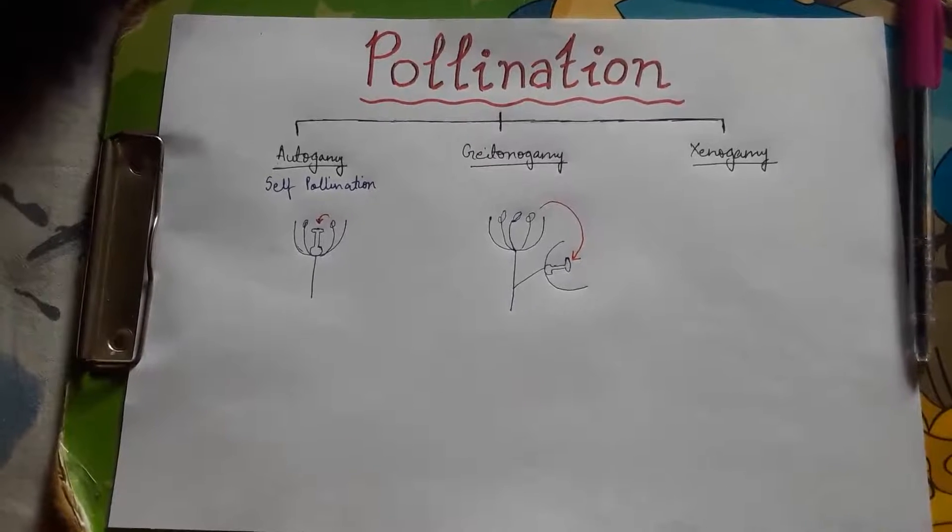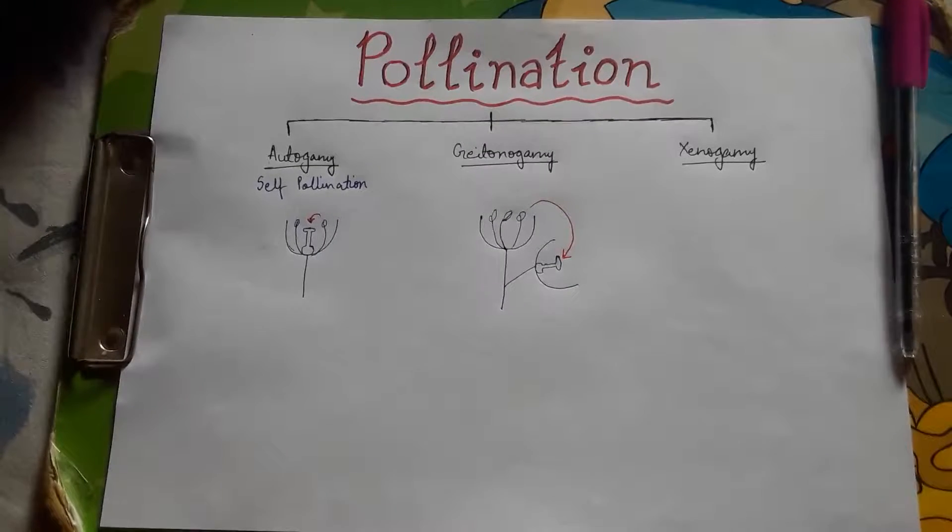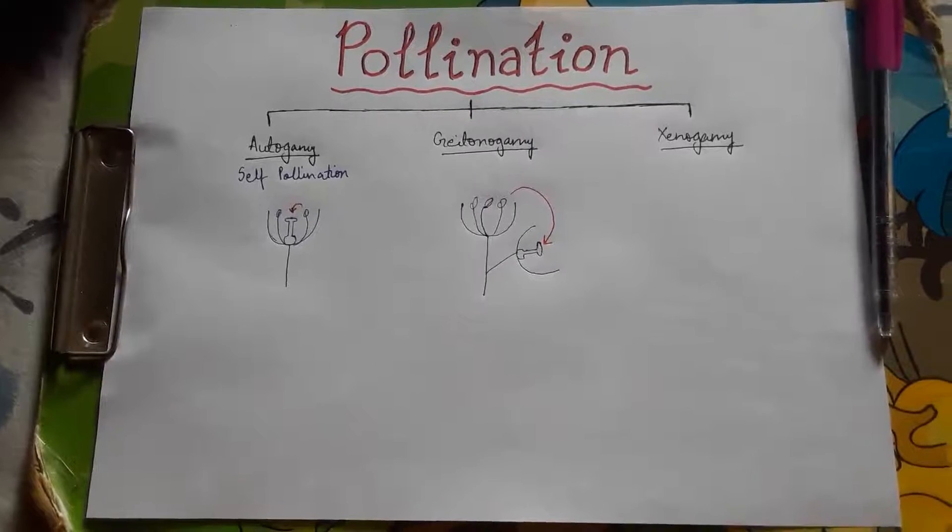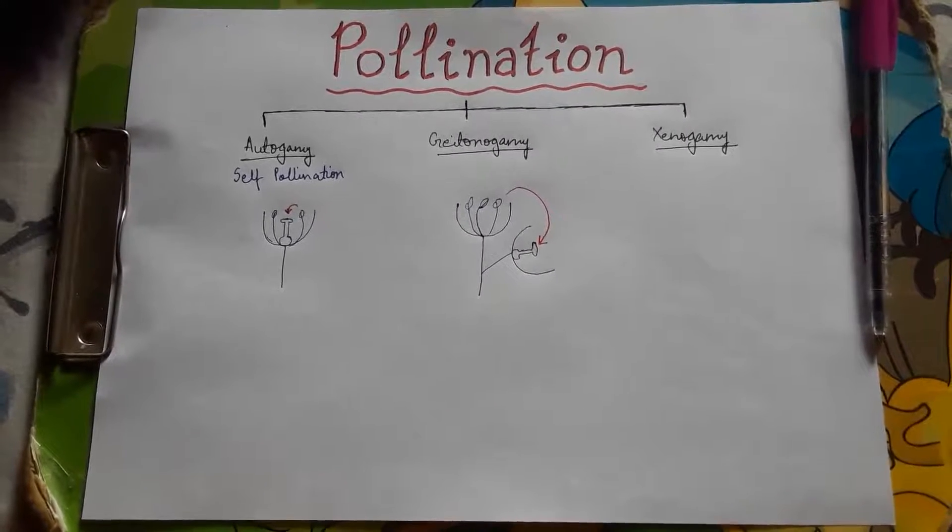This is geitonogamy. It is functionally cross-pollination, as it requires agents of pollination, but is genetically self-pollination.